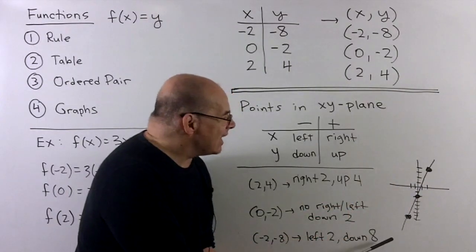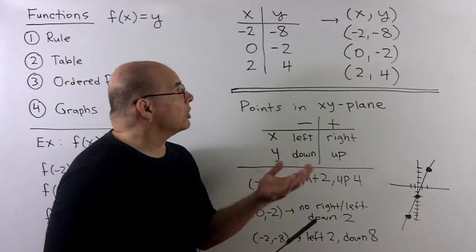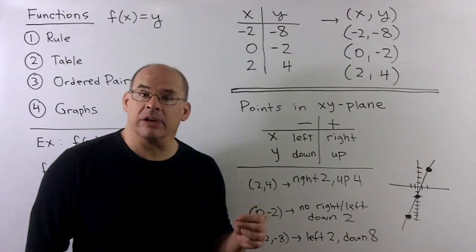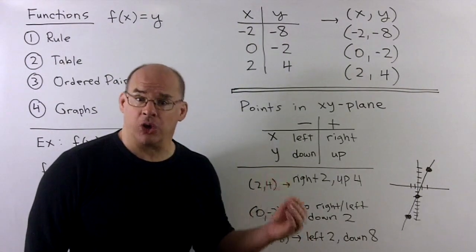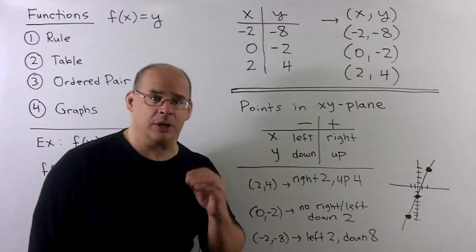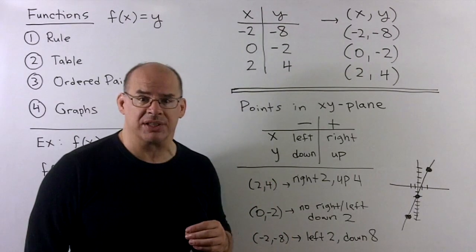We connect the dots, and then we see that our function f(x) equal to 3x minus 2 has as its graph a straight line. That's something we get into in the next couple of sections.